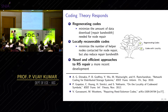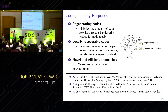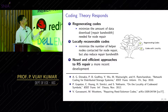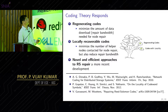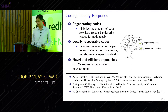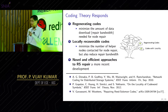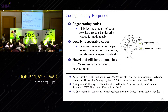In response, coding theory came up with two new classes of codes. The first, from the UC Berkeley team, is regenerating codes, which minimize the amount of data downloaded — the repair bandwidth — needed for node repair. The second, from Microsoft, is locally recoverable codes, where the idea is to minimize the number of nodes you contact during repair. More recently, people took a fresh look at repairing Reed-Solomon codes directly, finding interesting improvements using more advanced ideas.